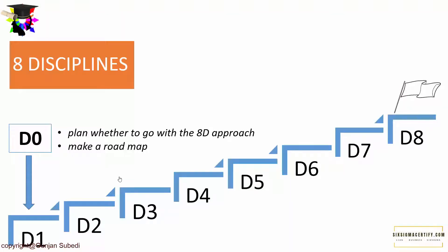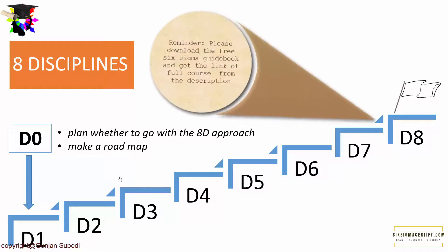The 8D approach consists of 8 disciplines, denoted as D, which can also be referred to as stages: D1, D2, D3, D4, D5, D6, D7, and D8. Later, as people felt the need for planning before implementation of the 8D problem solving approach, they added D0, also called the planning stage.